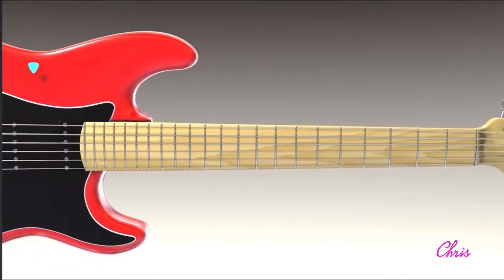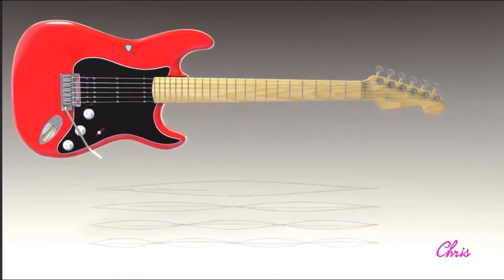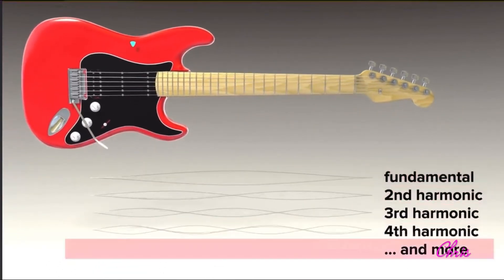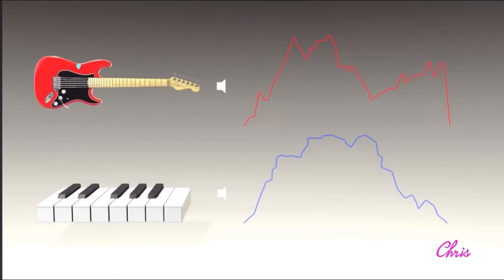Here's the exact same guitar string pluck sound, but I've isolated distinct frequencies from low to high. A single instrument note is really a sandwich of frequencies where one main frequency stands out. This frequency sandwich is known as an instrument's timbre, or unique sound.